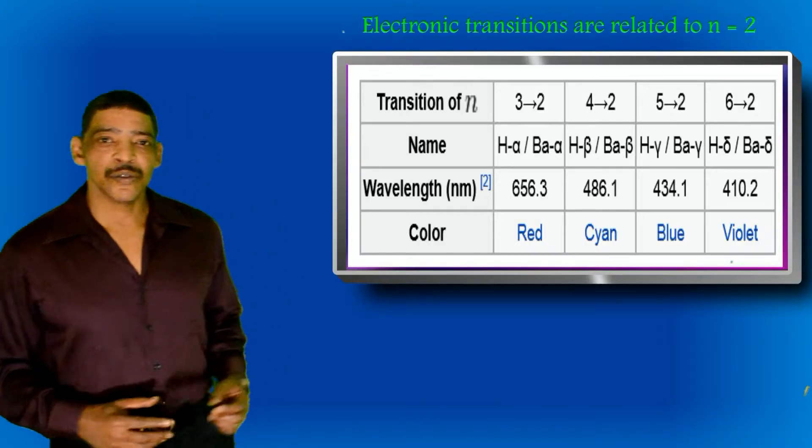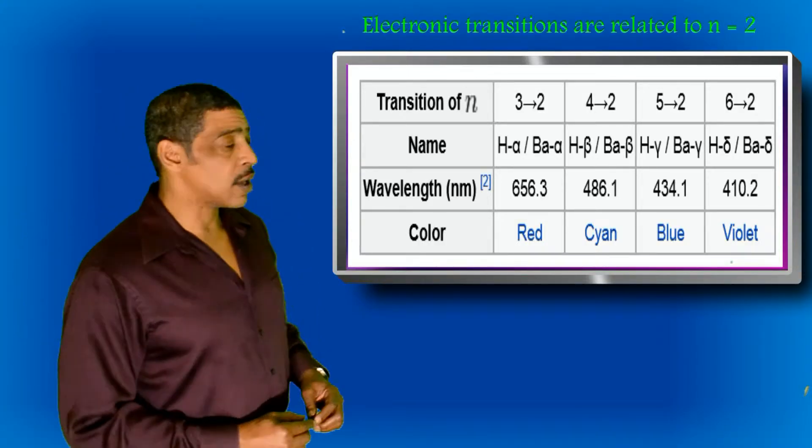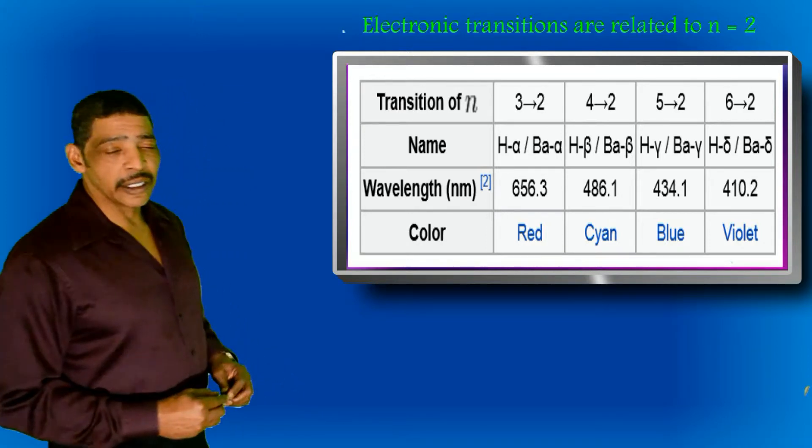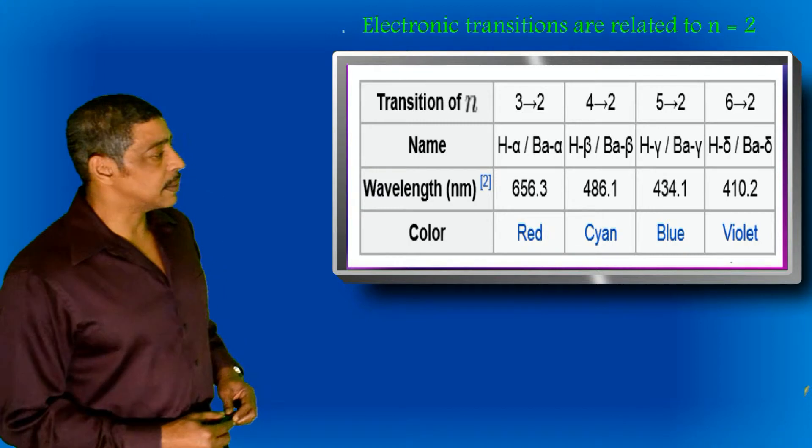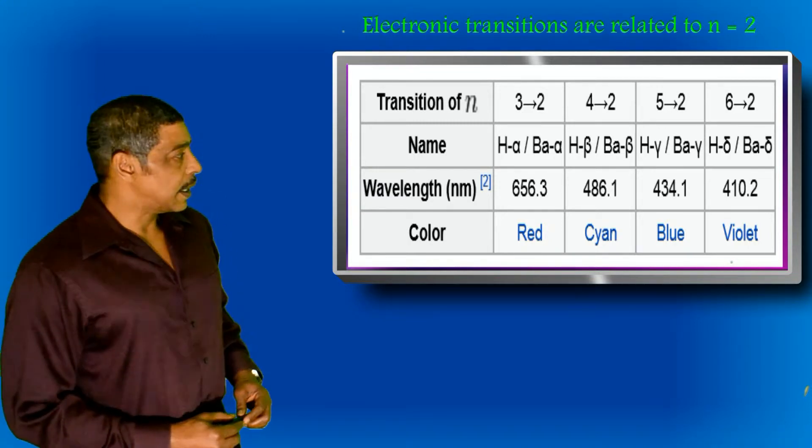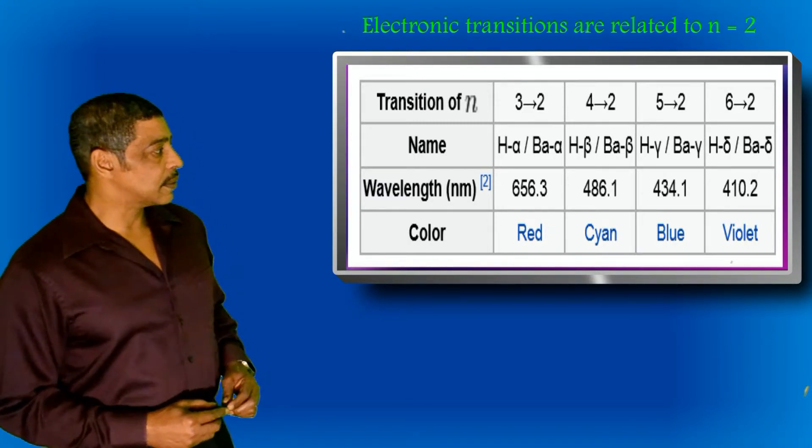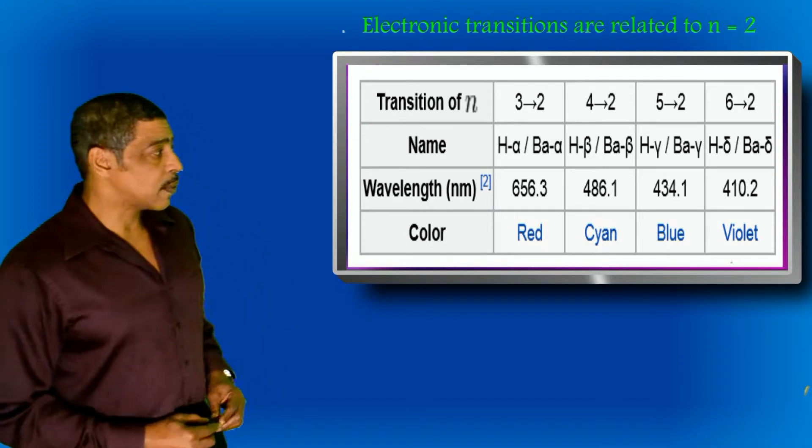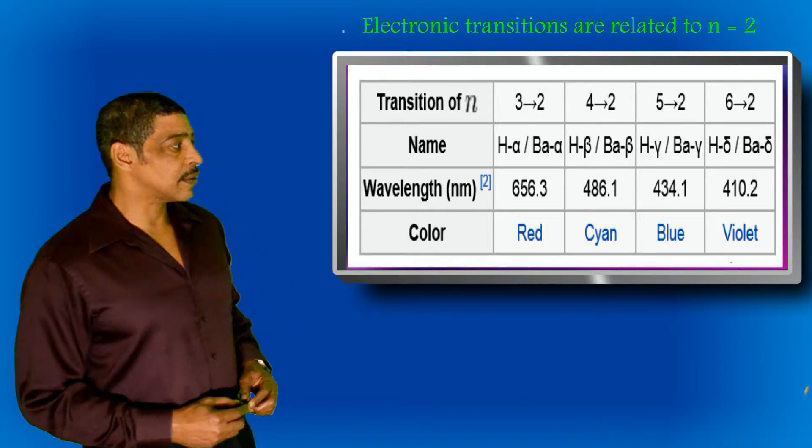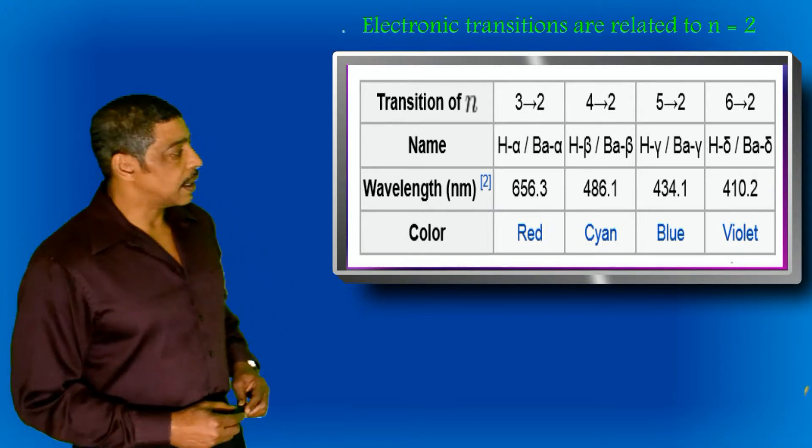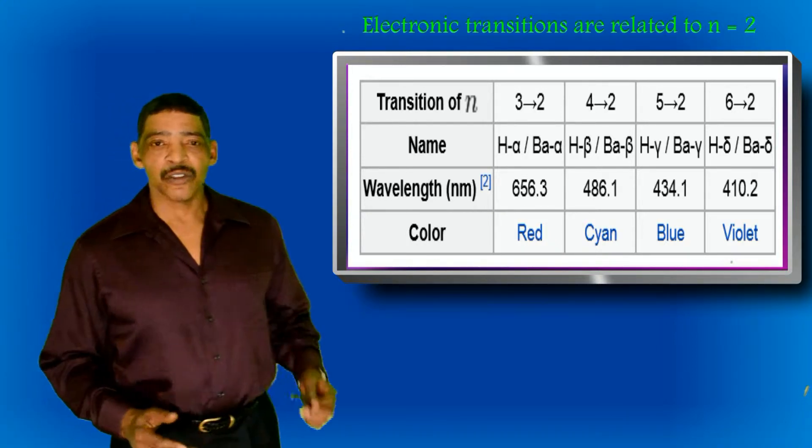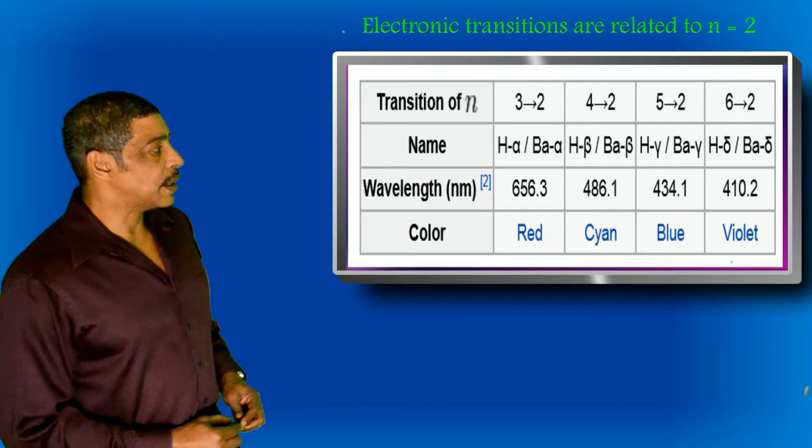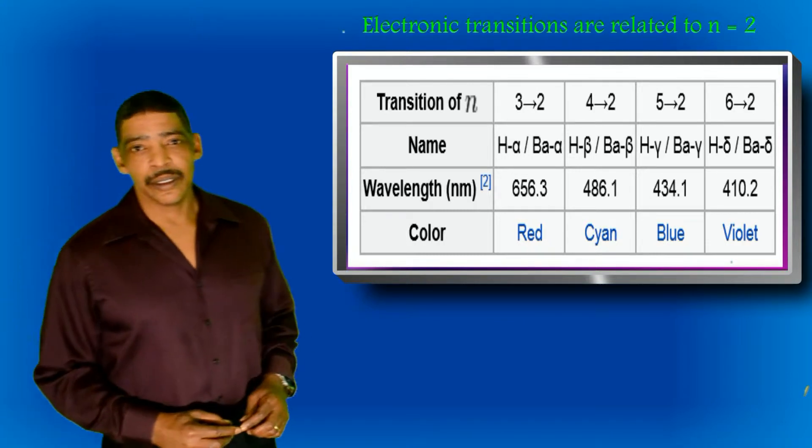The notation for the four wavelengths found in the Balmer series are either H or BA alpha at 656 nanometers, beta at 486 nanometers, gamma at 434 nanometers, and delta at 410 nanometers, corresponding to the colors red, cyan, blue, and violet.